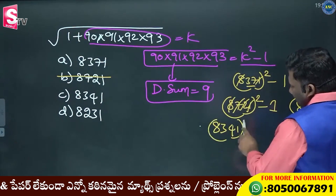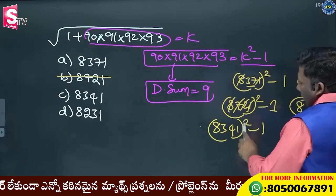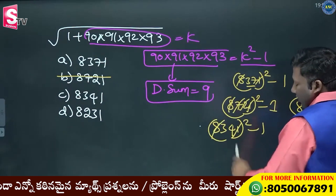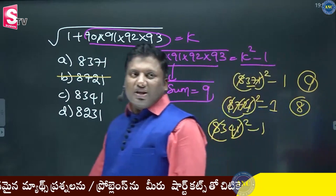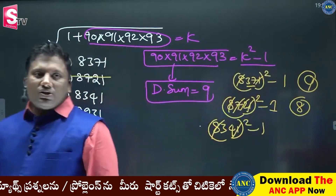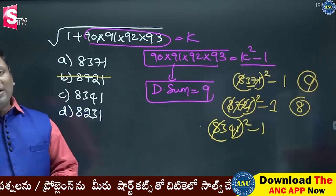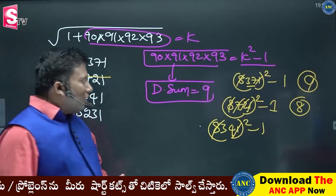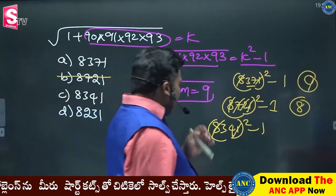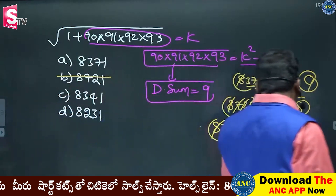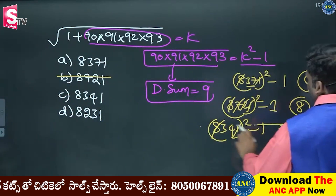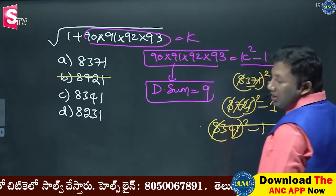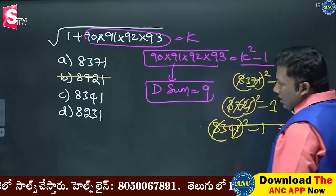8341 squared minus 1: 8 plus 4 is 9 — wait, 3 plus 4 is 7. 7 squared is 49. 4 minus 1 is 3. It is also not valid.